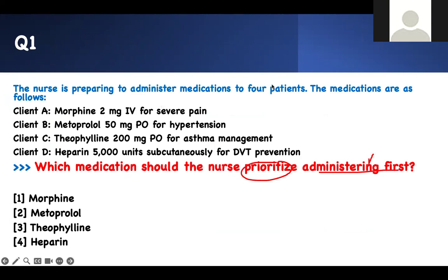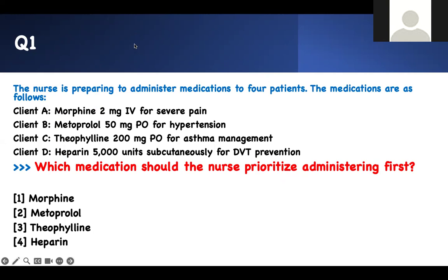The nurse is preparing to administer medication for four clients. The medications are as follows: morphine, metoprolol, theophylline, and heparin subcutaneous. You have to know them. Morphine is for pain, metoprolol is for hypertension, theophylline is for asthma management, and heparin 5000 subcutaneous is to prevent DVT. Which medication should you prioritize?